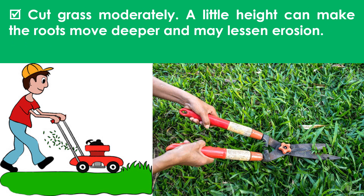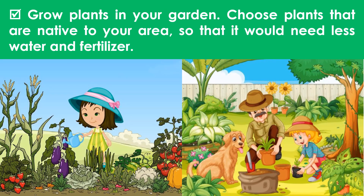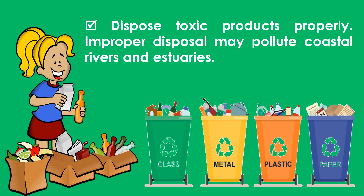Cut grass moderately. A little height can make the roots grow deeper and may lessen erosion. Grow plants in your garden. Choose plants that are native to your area so that they would need less water and fertilizer. Dispose of toxic products properly, as improper disposal may pollute coastal rivers and estuaries.